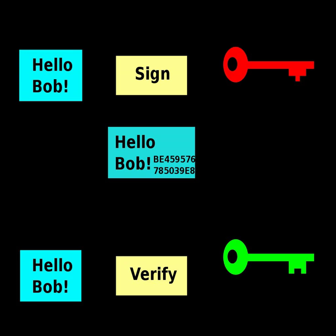A digital signature is an authentication mechanism that enables the creator of the message to attach a code that acts as a signature. The digital signature algorithm, developed by the National Institute of Standards and Technology, is one of many examples of a signing algorithm.